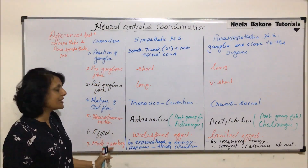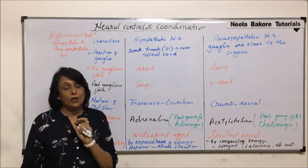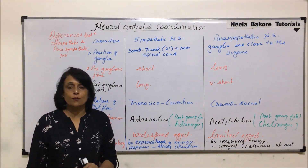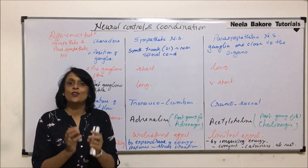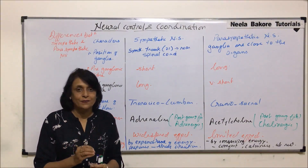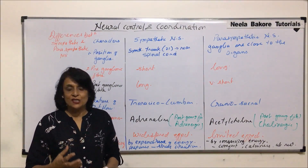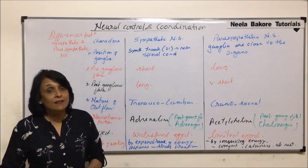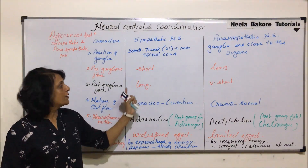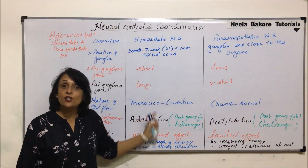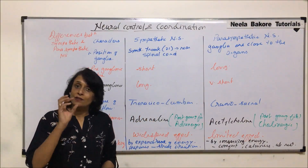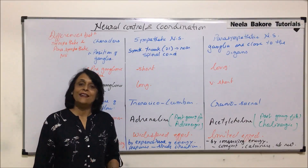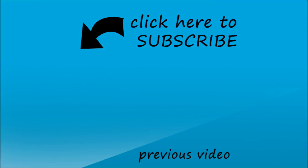This is the comparison we have seen on the basis of these characters. In the next part, we will see how these systems work on particular organs like tear glands, peristalsis, bladder, heart rate, and blood pressure, because their action is totally antagonistic on the same organ — we will take up each one in the next part.